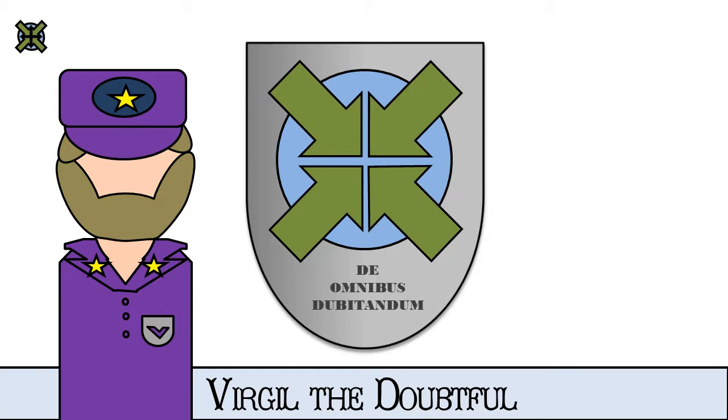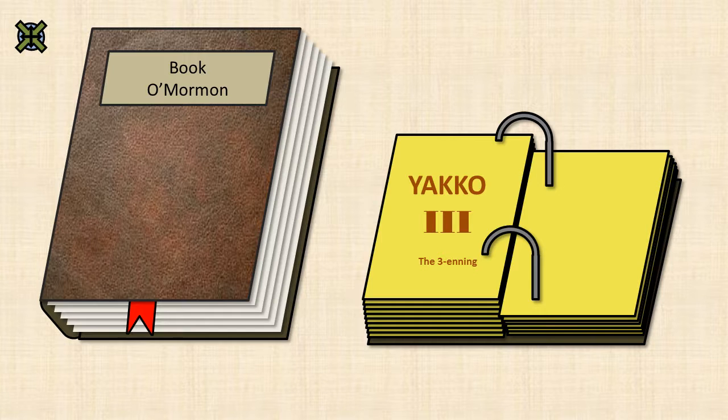Hi, I'm Virgil the Doubtful, Supreme Commander of Forces in Africa, and this is the poorly animated Book of Mormon. We, you and I together, are in the third chapter of Yakko. I'm staying with it. I'm going to keep calling him Yakko because it's funny. Reminds me of Animaniacs, which does date me a little.